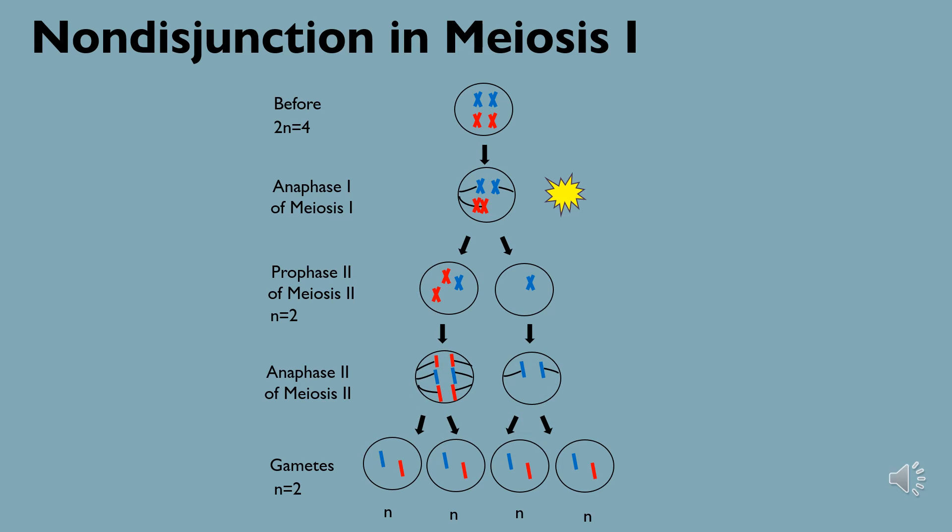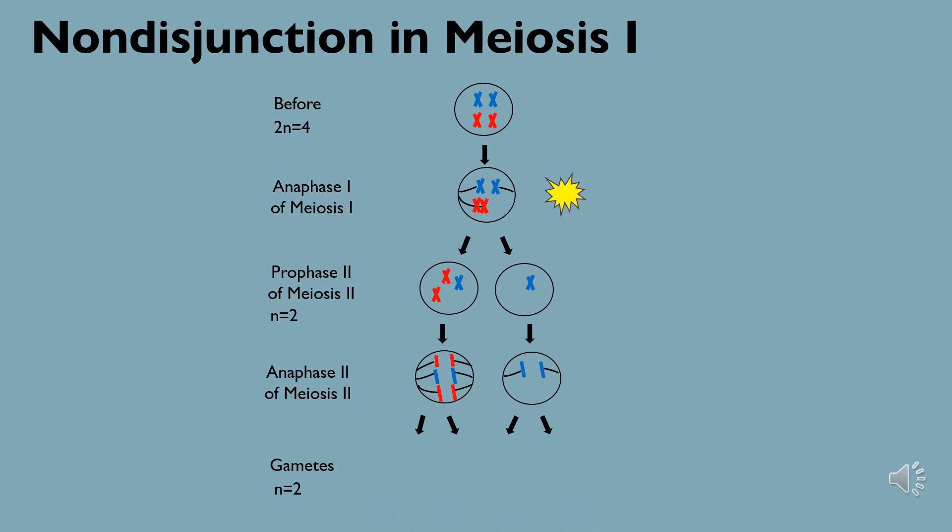As a result of a nondisjunction in anaphase 1, two of the four resulting gamete cells have extra copies of a chromosome, while the other two have no copies of a chromosome. As we can tell from this information, nondisjunctions that arise during meiosis 1 impact normal chromosome inheritance in all four daughter cells.